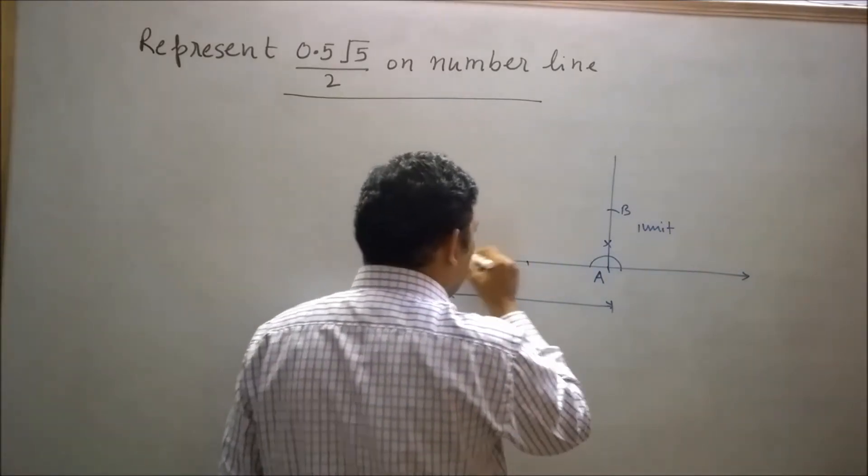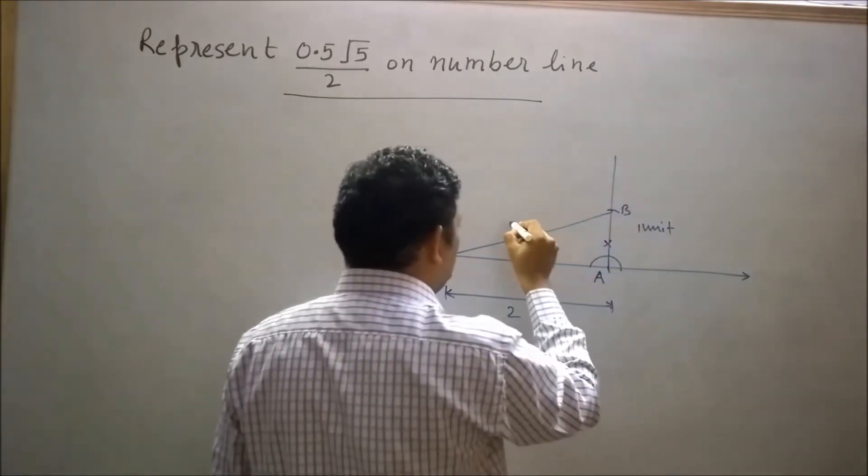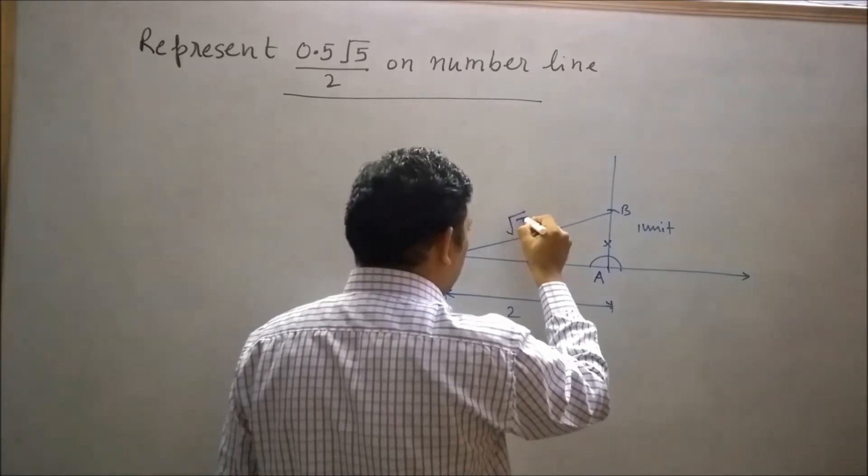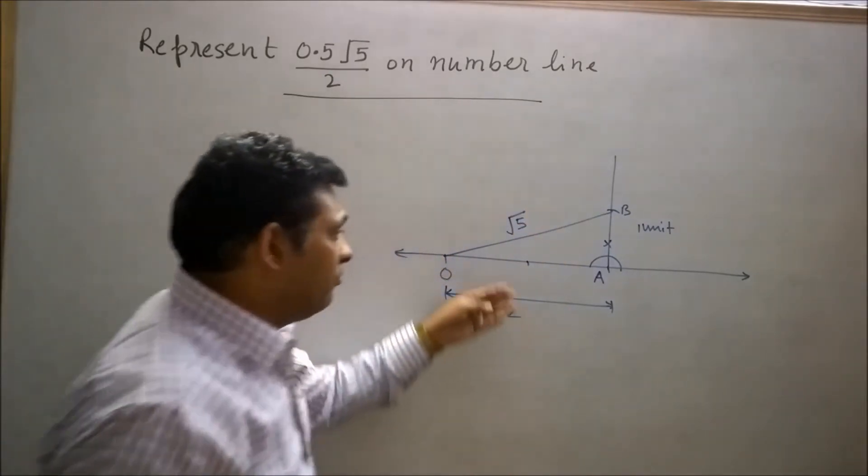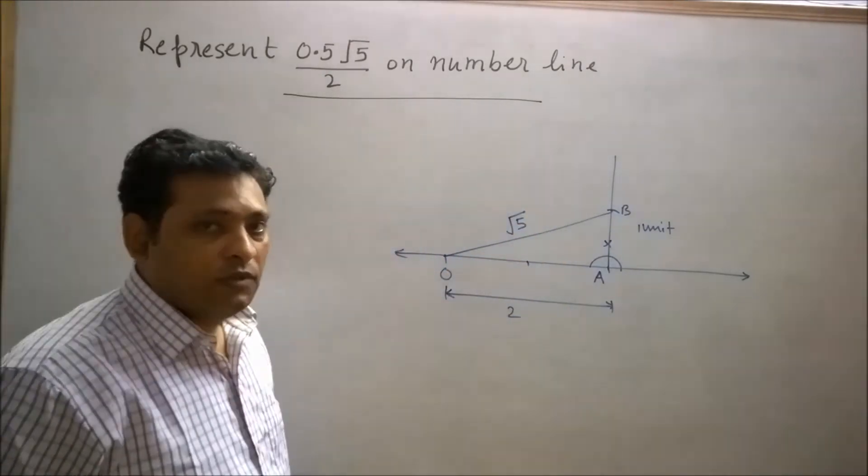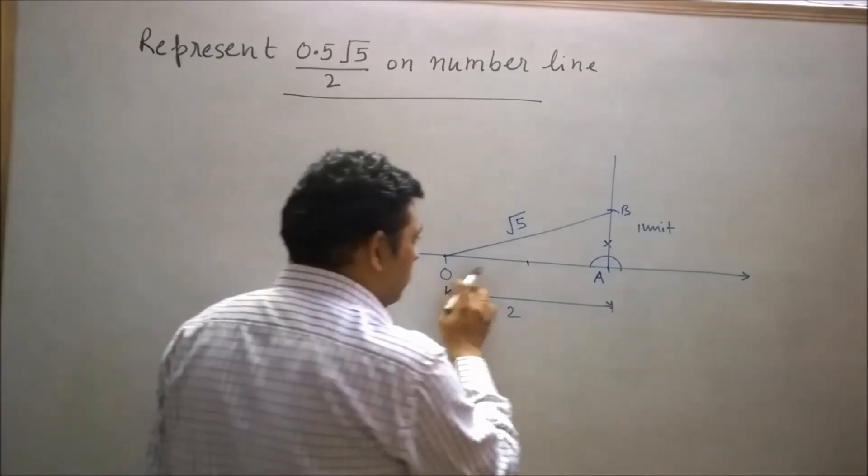Now join O to B. Then OB represents √5. Let's try to understand why OB represents √5. Now consider right angle triangle OAB.